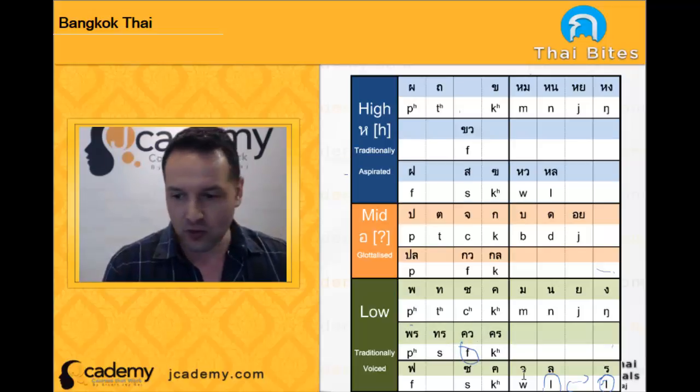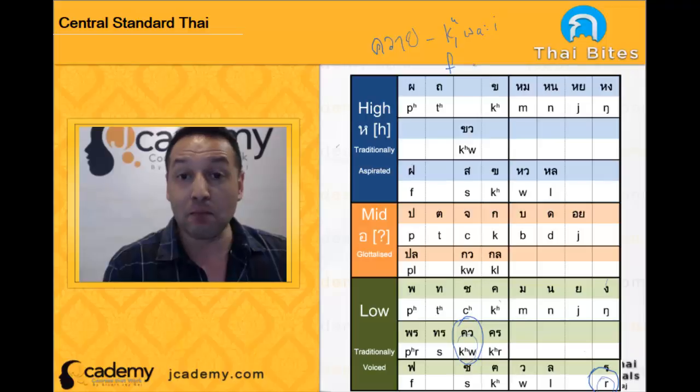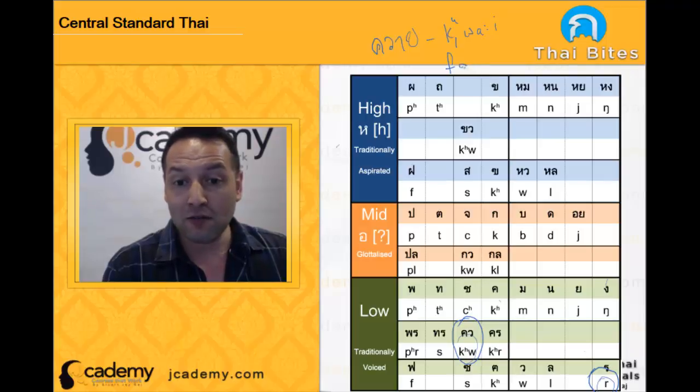if we come back to central standard Thai, where I wrote just now, kwai. Now, that kuh becomes a pho. And so, in Bangkok Thai, that becomes phai. And you'll still hear people, especially the older generation,